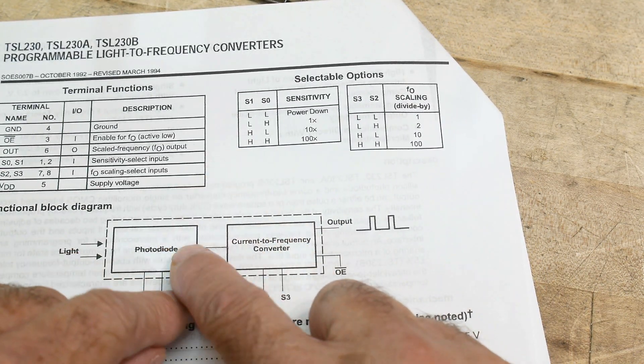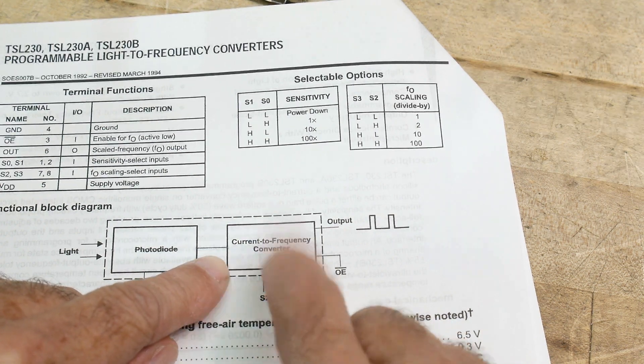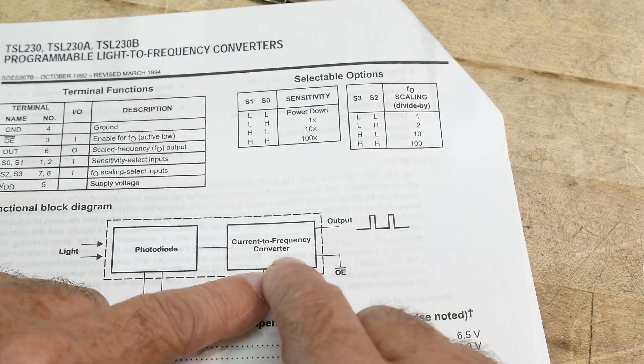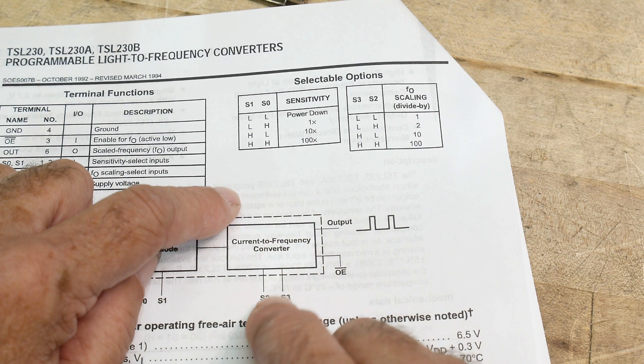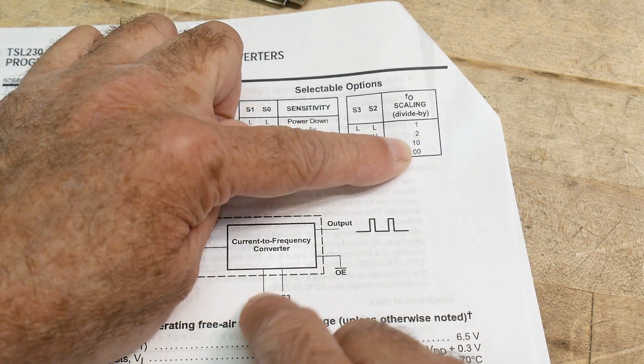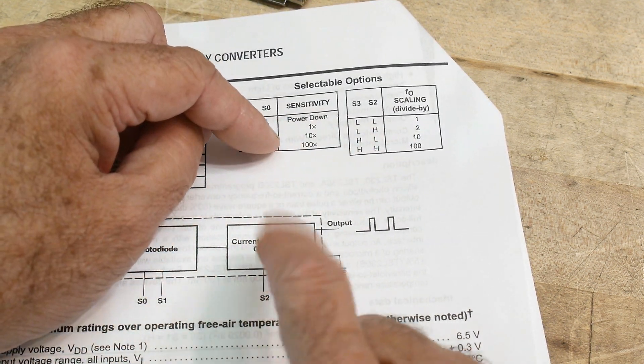And then over here you can take the current of the photodiode and change it into a frequency. And then you can take that frequency and you can scale it by one, two, ten, and a hundred. So that's a divider.